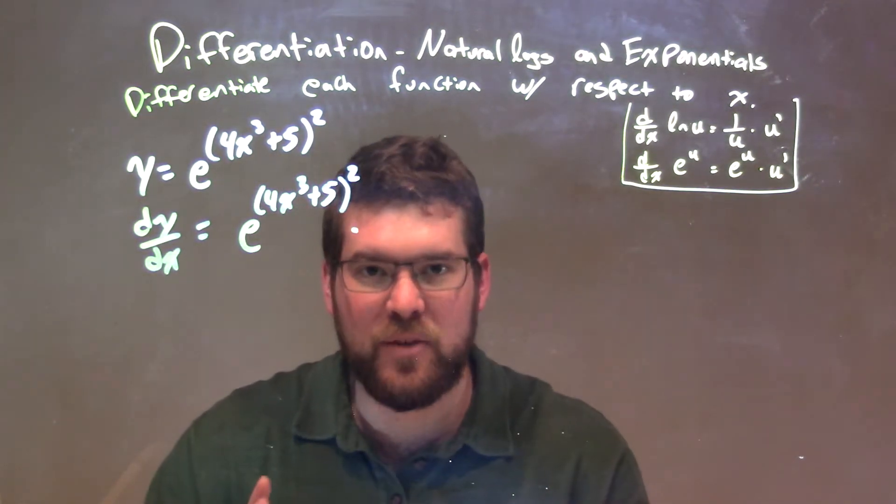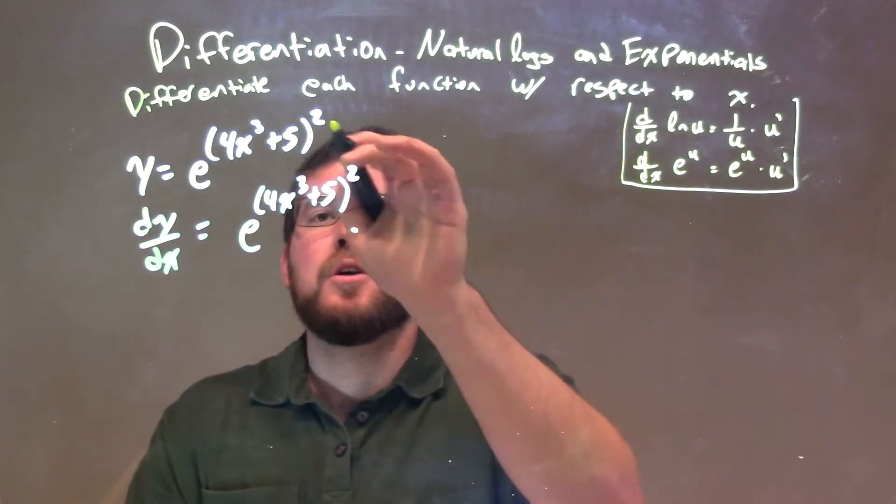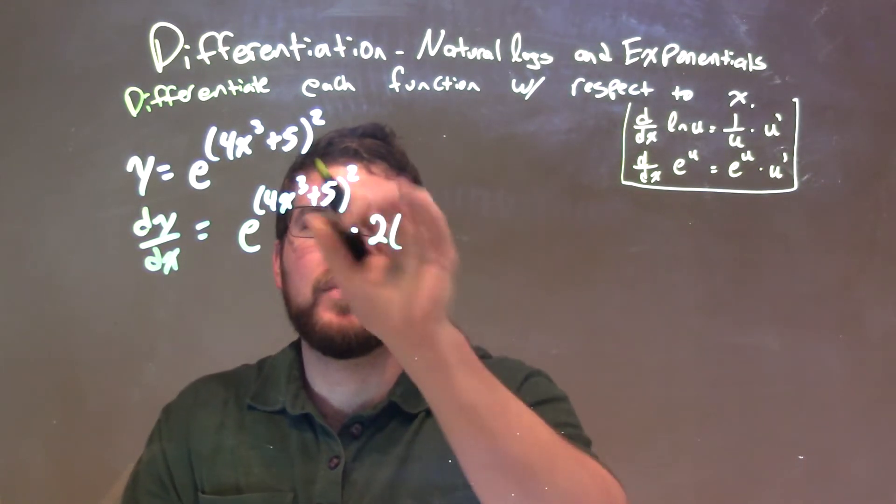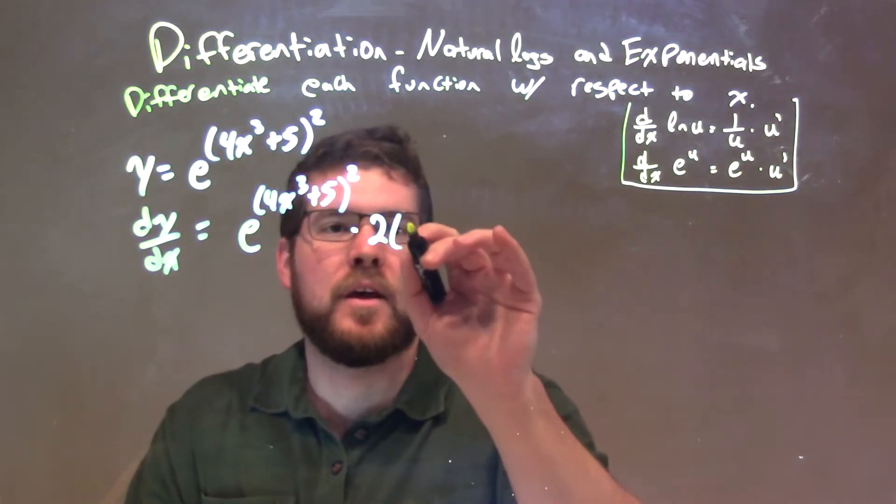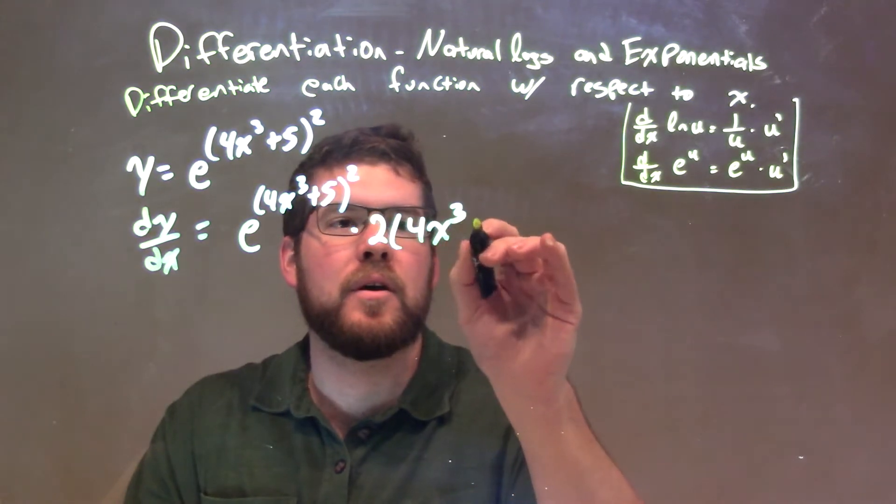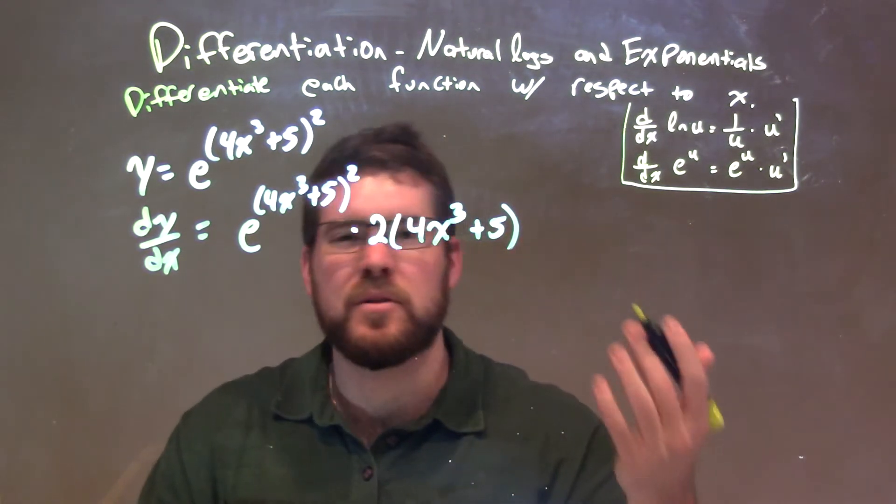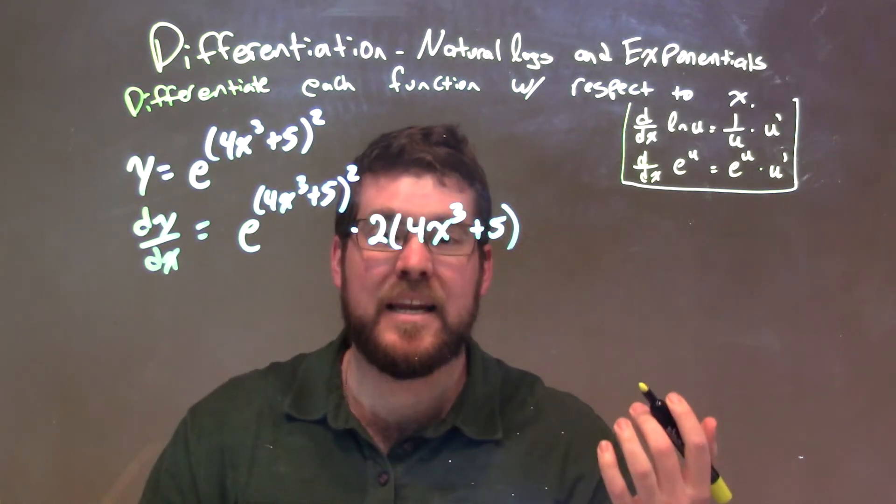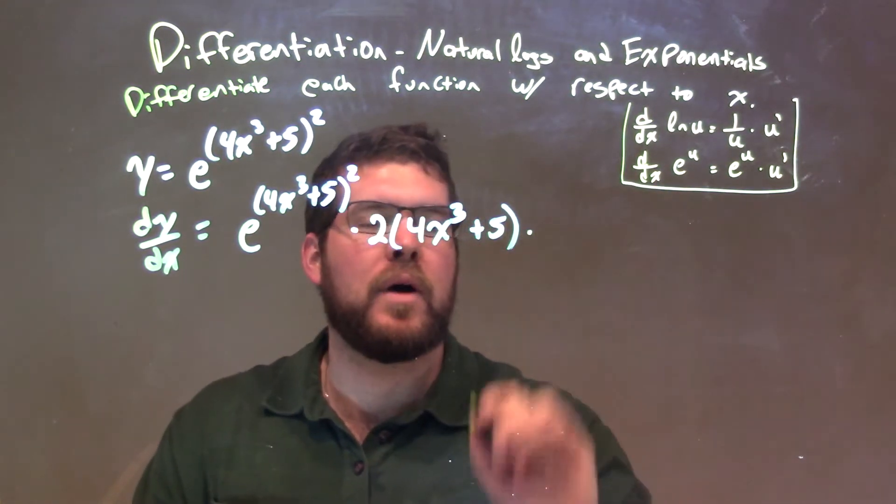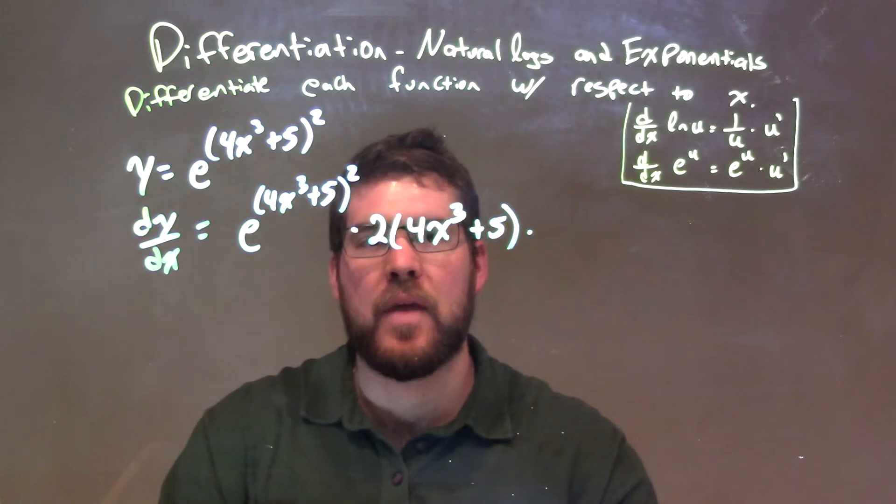Well, the derivative of the exponent involves a chain rule and power rule. Alright, 2 comes down up front times, we keep that inside parenthesis the same, 4x to the third plus 5. And we subtract the exponent by 1. Well, 2 minus 1 is 1, we don't really need to write that there.